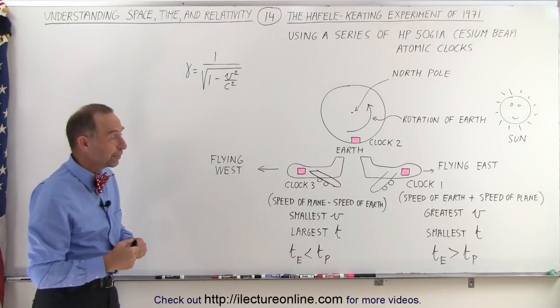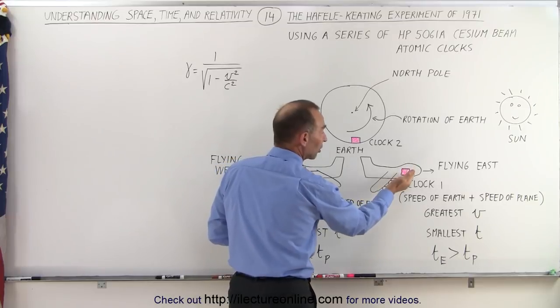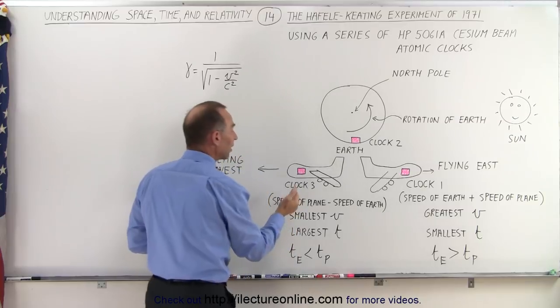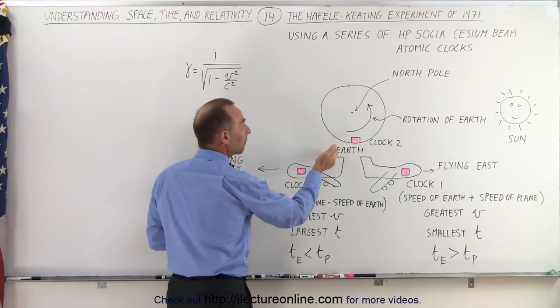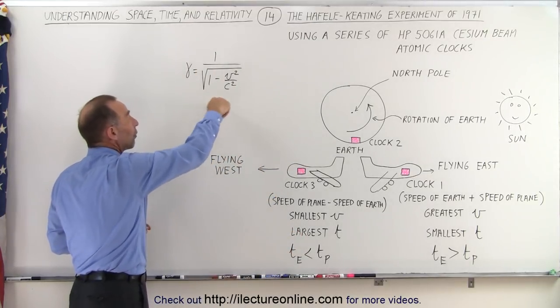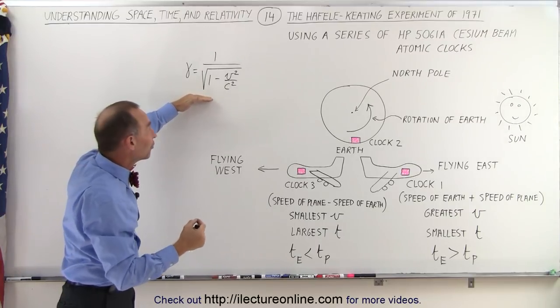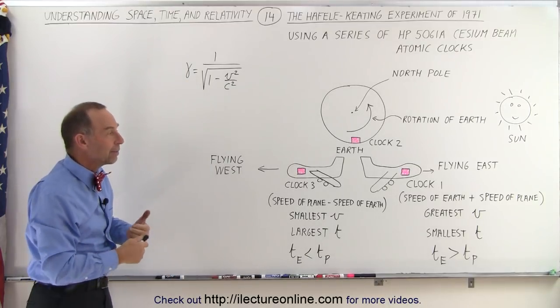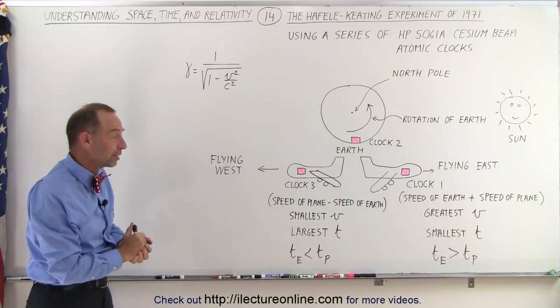Was the experiment successful? It was a tremendous success. Not only did they prove that the time passage on the clocks in the eastward plane was smaller than the time passage of the clocks on Earth, they also showed that the time passage of the clocks in the westward plane was greater than on Earth. Using the equations derived from the Lorentz transformations, they showed that the amount of difference was exactly according to the equations explaining time dilation due to special relativity.